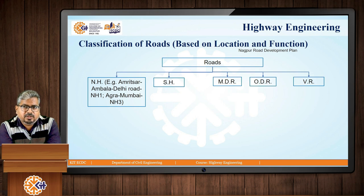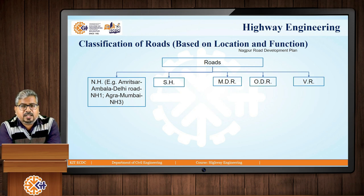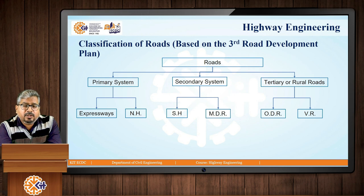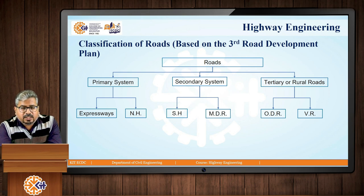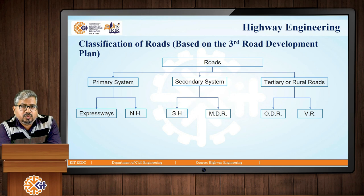Village roads connect villages or groups of villages to the next higher category of road. They are meant for movement of fast-moving vehicles and have superior facilities and design standards for carrying heavy traffic. They are owned by either the state government or the central government depending on whether the route belongs to a state highway or national highway.